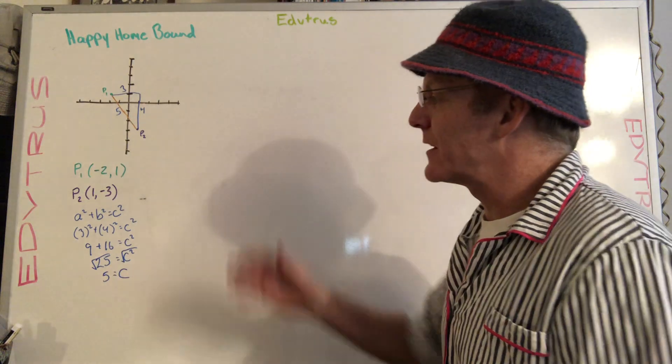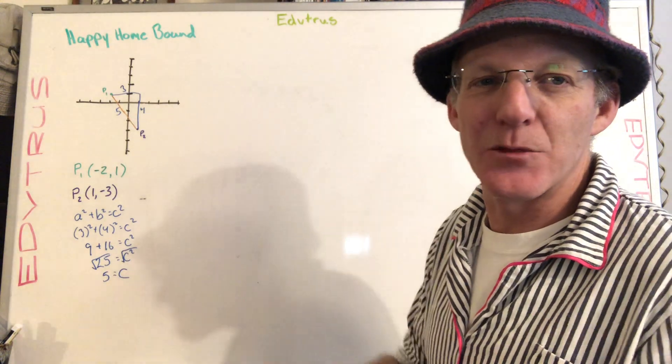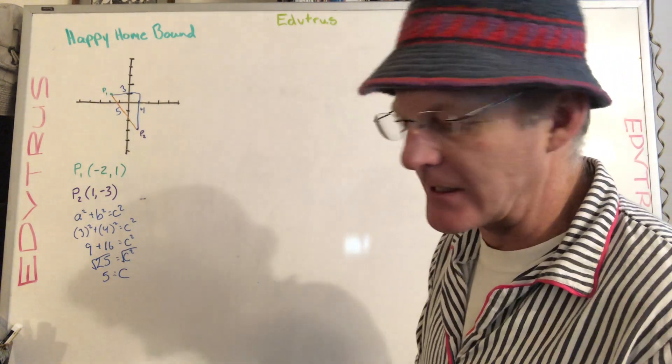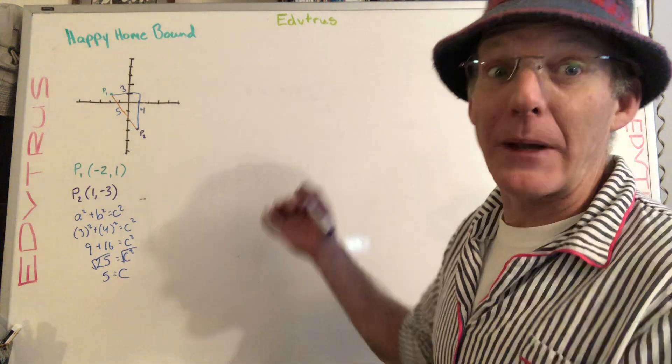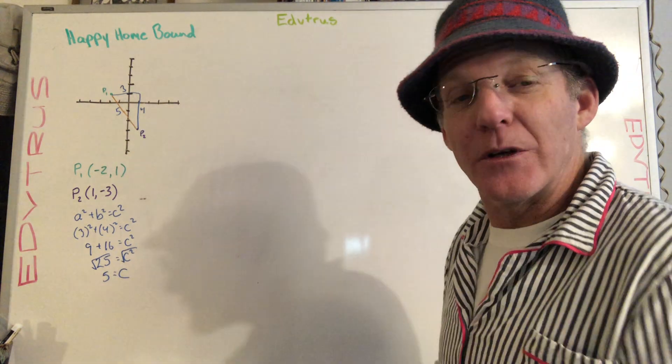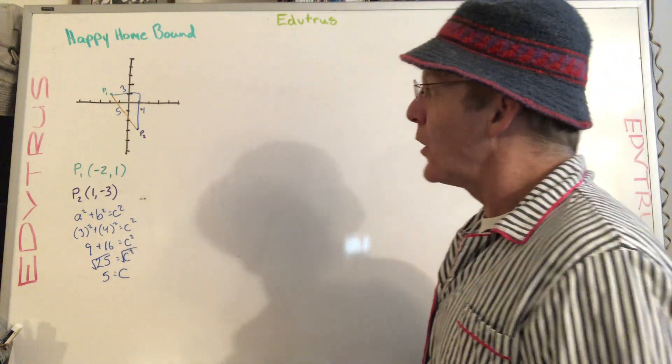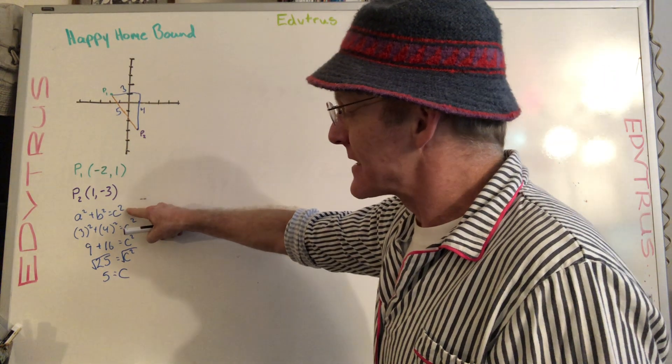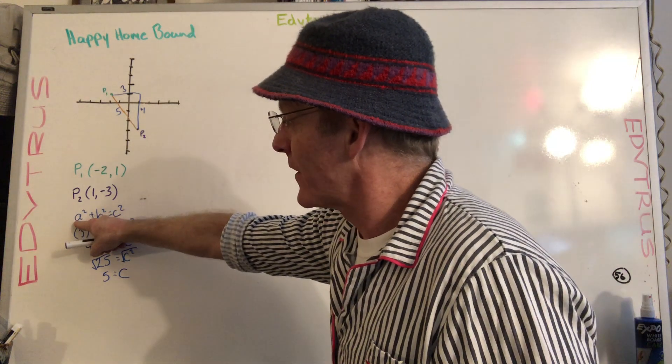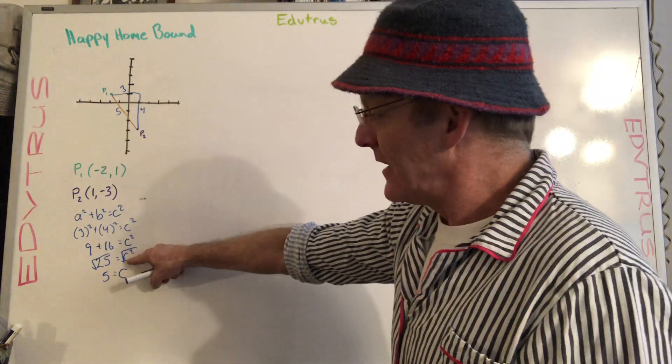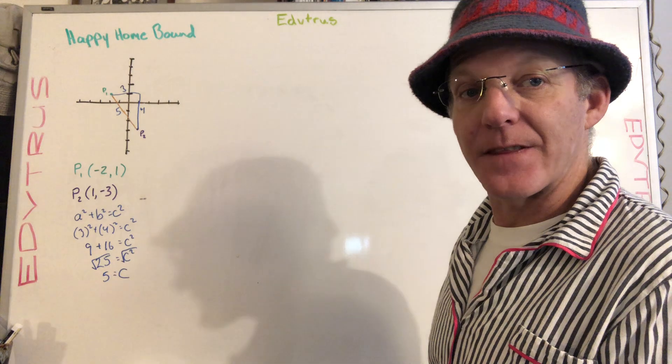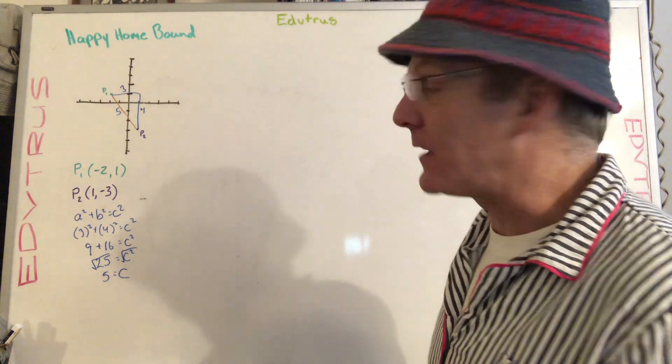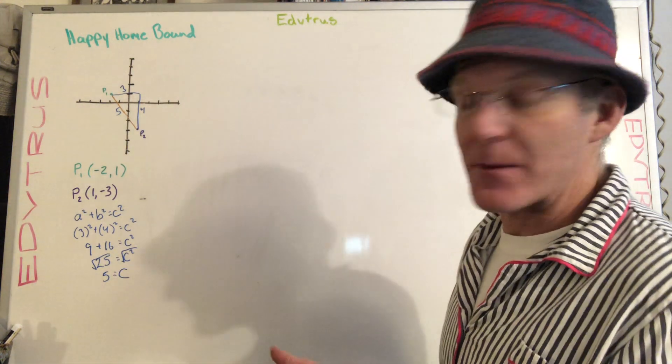But what happens when the numbers are uglier, they're decimals, fractions, radicals, anything like that, or much bigger or really small, and we need more of a formula to do this? Well, what we're going to do is the distance formula. And so what we're going to realize is the distance formula is really nothing more than the leg squared plus the leg squared, and then square rooting both sides to get the hypotenuse by itself. The distance being the same as the hypotenuse.